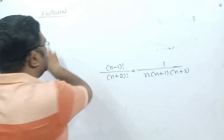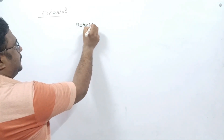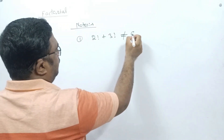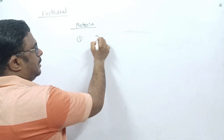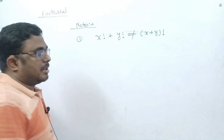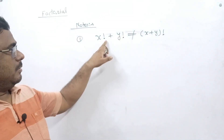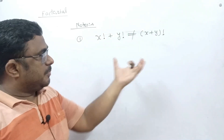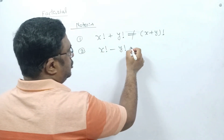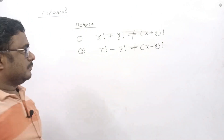Now let us move to another topic — important things to keep in mind. First: 2! + 3! is NOT equal to 5!. In general, x! + y! ≠ (x+y)!. You should not think that the factorial sign can be factored out by adding the numbers inside. Similarly, x! − y! ≠ (x−y)!. Keep this in mind.